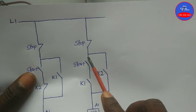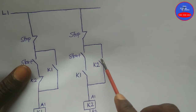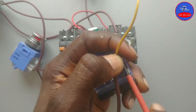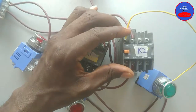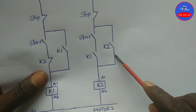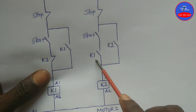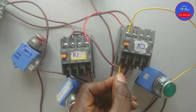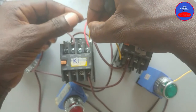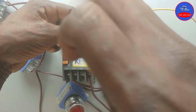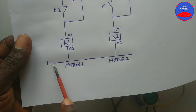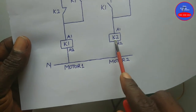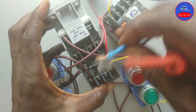We tap from the other side of the open contact on K2. From the other side of the open contact, it goes to the K1 open contact. It's left with the neutral, going to K1 A2. We tap from there to K2 A2. This is K1 A2 and K2 A2.